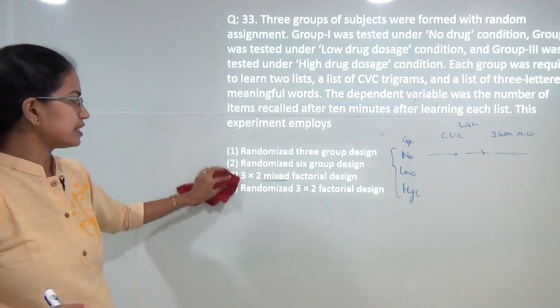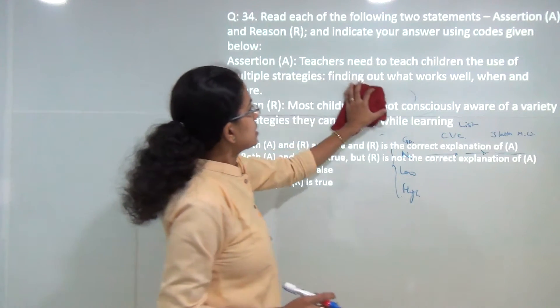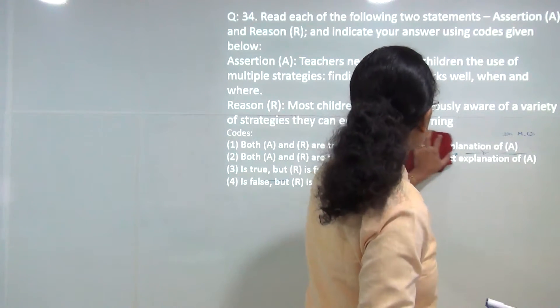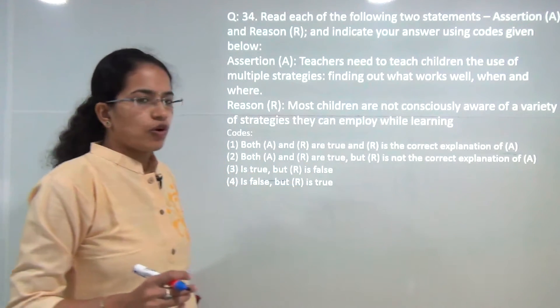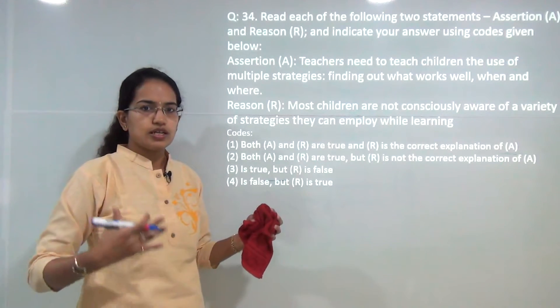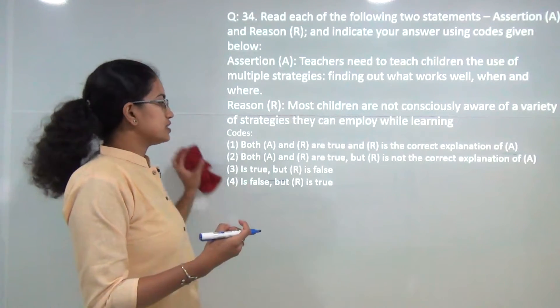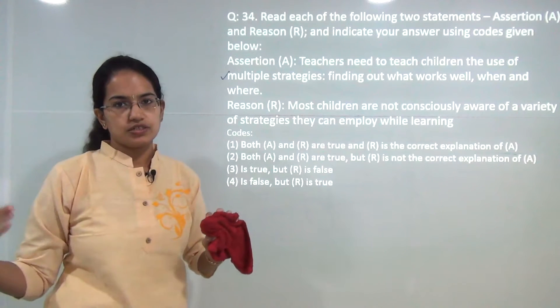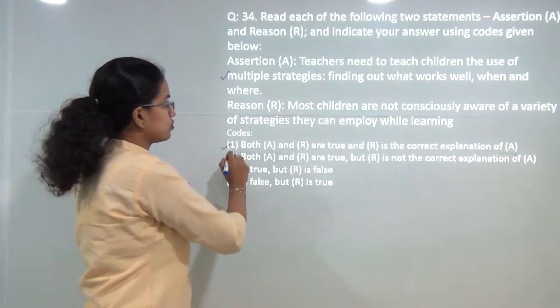Teachers need to teach children to use multiple strategies to find out what works well when and how. The basic idea here is most of the children do not know how to learn and what technique to use when learning. So teachers provide them multiple strategies and then they see what works well for them. Reason is the correct explanation for the assertion, so both are correct.